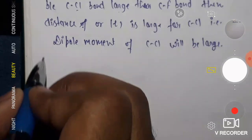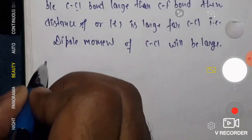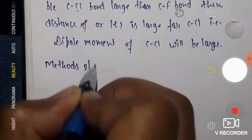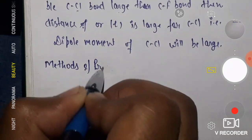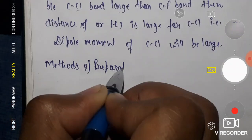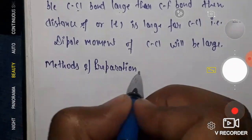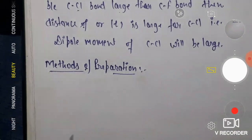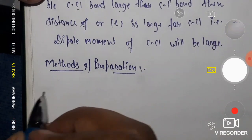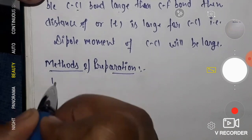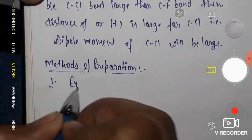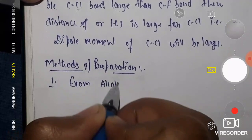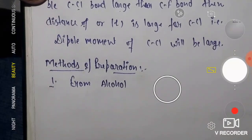Today we are going to discuss methods of preparation. The first method that comes under this is: preparation from alcohol. The formula of alcohol is ROH.